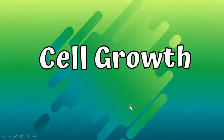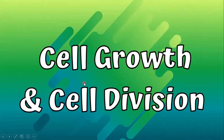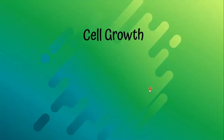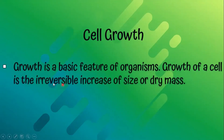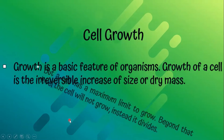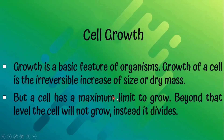Cell growth and cell division. Growth is a basic feature of organisms, and growth of a cell is the irreversible increase of size or dry mass. A cell has a maximum limit to grow, and beyond that level the cell will not grow — instead it divides.